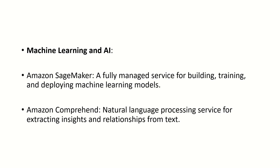Coming to the next slide, we have machine learning and AI services provided by AWS: Amazon SageMaker and Amazon Comprehend. Amazon SageMaker is a fully managed service for building, training, and deploying machine learning models. Amazon Comprehend is a natural language processing service for extracting insights and relationships from text — it helps in figuring out relationships by processing text.